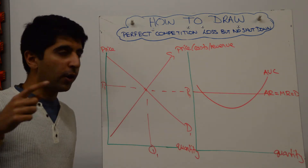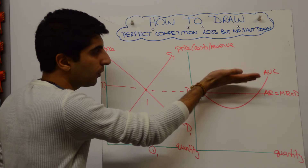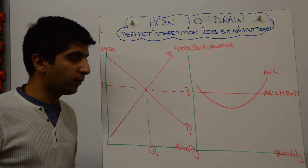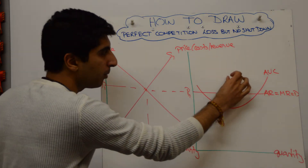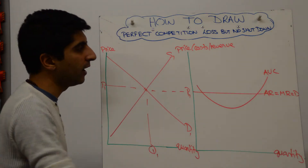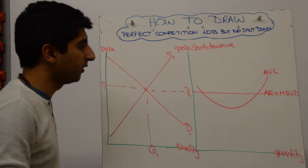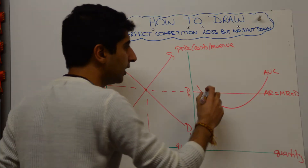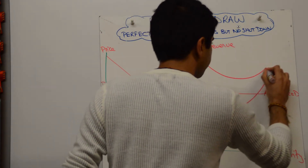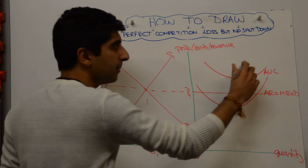Then draw your average cost curve. You know a loss is being made, so draw your AC above AR — but still draw it correctly. The minimum point is slightly to the right of AVC, as we've done in previous videos, and it pulls closer towards AVC as more and more quantity is being produced. Something along these lines will do for AC. Label it.